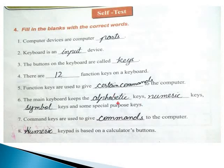The main keyboard keys are alphabetic keys, numeric keys and symbol keys. Some keys are special purpose keys. Command keys are used to give commands to the computer. Numeric keypad is based on a calculator's buttons.